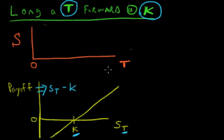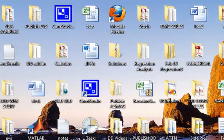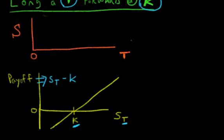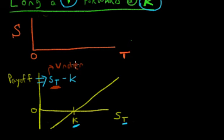But how does this make it a derivative? When people say that a forward contract is a derivative, what do they mean? What they mean is that the payoff derives from... this payoff right here derives itself from an underlying contract. So this is the underlying contract.